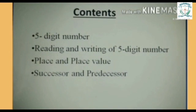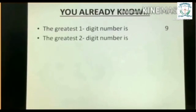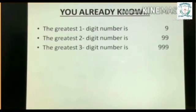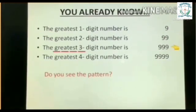You have already learned in the previous class: the greatest one-digit number is 9, the greatest two-digit number is 99, the greatest three-digit number is 999, the greatest four-digit number is 9999. Look at this pattern: greatest one digit 9, greatest two-digit number 99, greatest three-digit number 999, greatest four-digit number 9999.